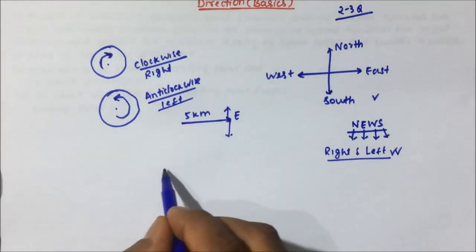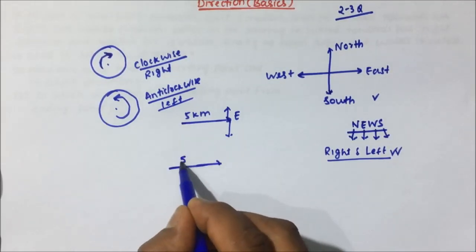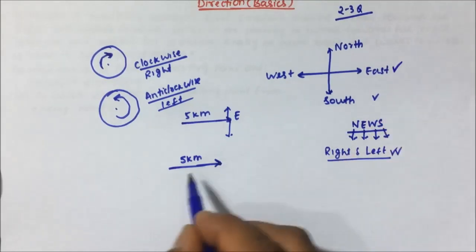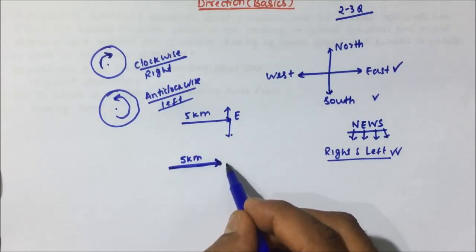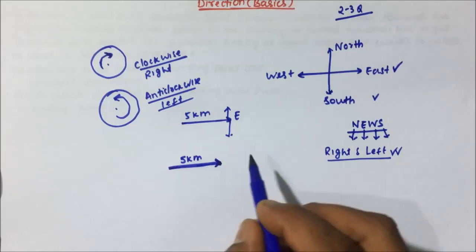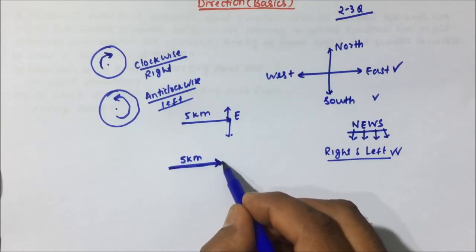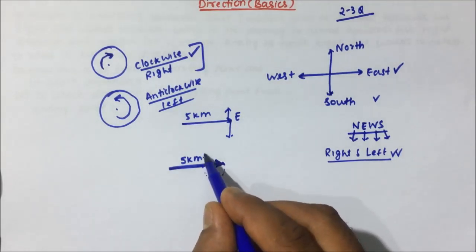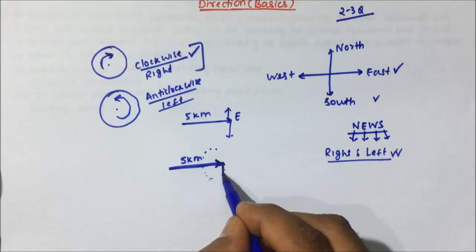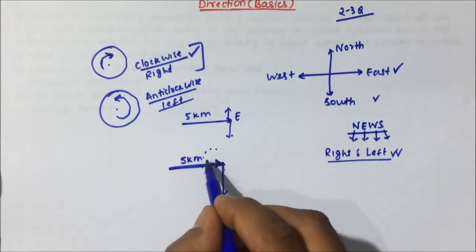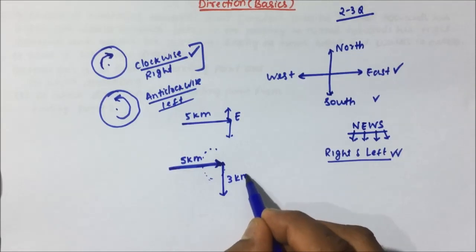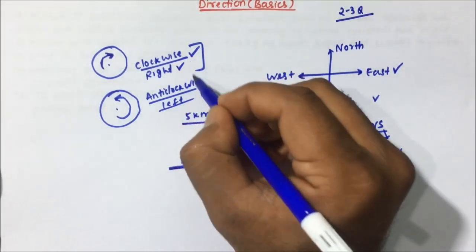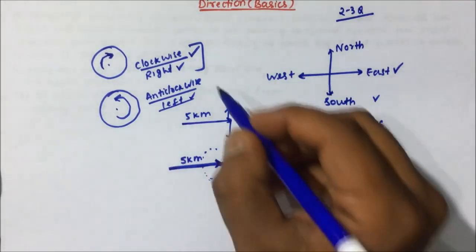Suppose in a question, a person moves five kilometers towards the east direction. Now, if that person has to take a right, in which direction will he move? Put your pin point there — right means clockwise. So put your pin point here and see how the clockwise direction goes. Clockwise will be below (south). So suppose a person moved 5 km towards east and then 3 km towards right — right will be below. Like this we identify right and left, and when we solve a few questions, that will get clearer.